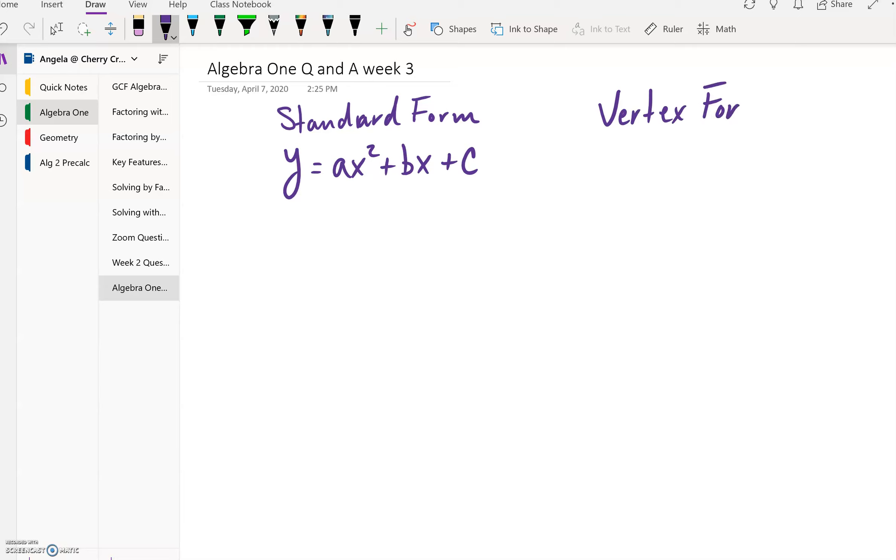And vertex form of your equation looks like this: y = a(x - h)² + k. And some things we know from standard form: we know that if a is positive, so if it's greater than zero, then you're going to have a parabola that opens up.